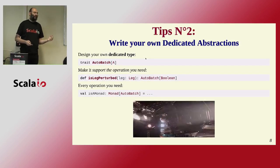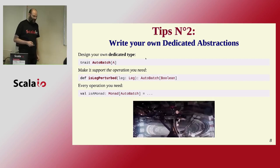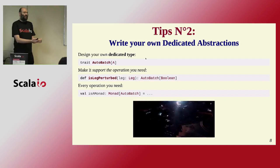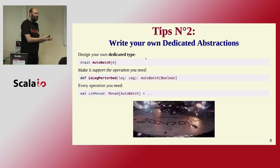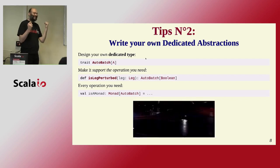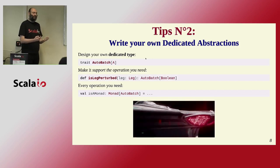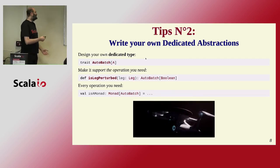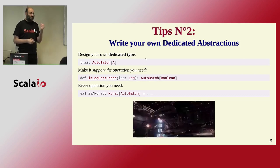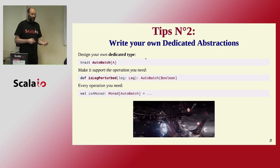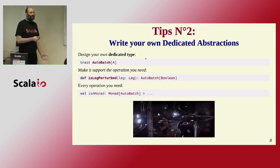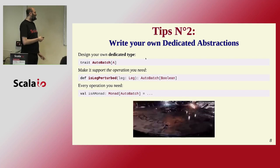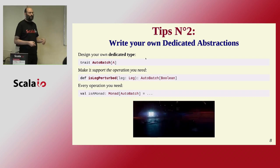The second tip is: write your own abstractions. Why? Because they fit your needs. If you take someone else's abstraction, it may not fit. You can tailor one that fits exactly to what you want. So what do we want? We want a type — let's call it AutoBatch — and we want it to support this function: the unitary call. And because having a monad is desirable, we want it to be a monad. We want to be able to write code doing maps and flatMaps and all the things we like.